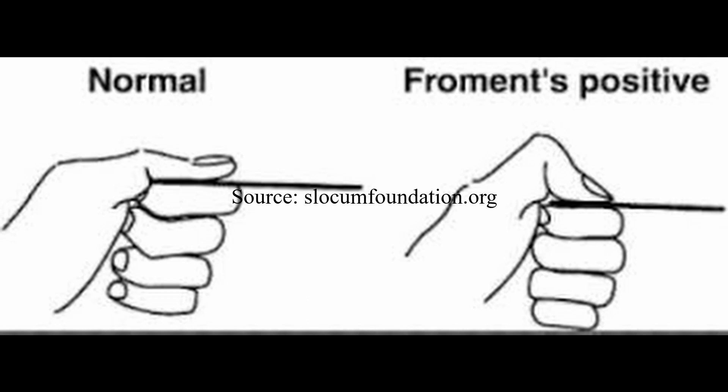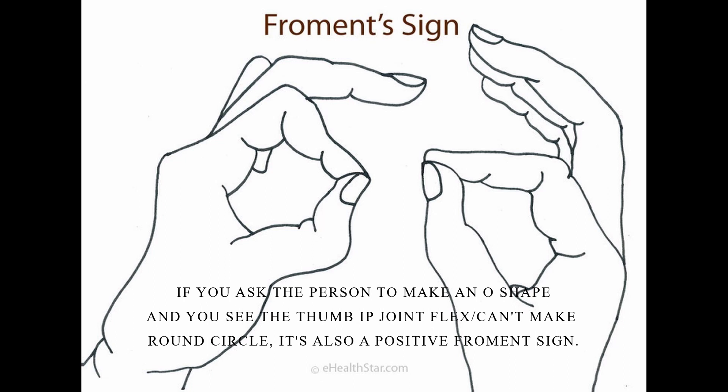then this is a positive Froment's sign. It also indicates adductor pollicis weakness. You can also ask the person to make an O shape with their thumb and their index finger and see if they can make a round circle. If you see that their thumb IP joint is flexing and they're compensating again, then that is a positive Froment's sign as well.